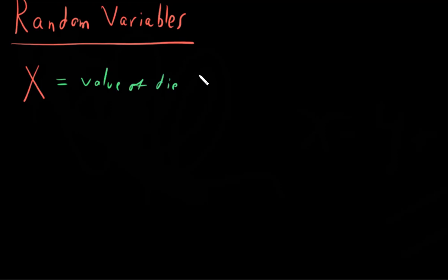And we know what the potential values of that could be. There's only six of them. And so what we have are the numbers, the numbers that X can take on here are one, two, three, four, five, and six.